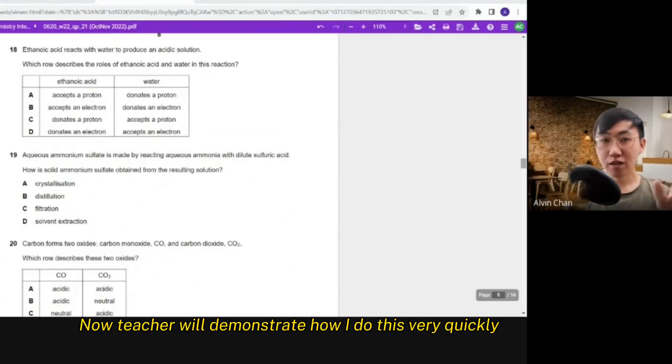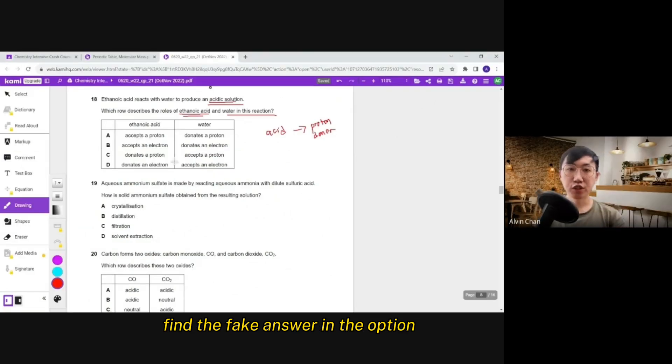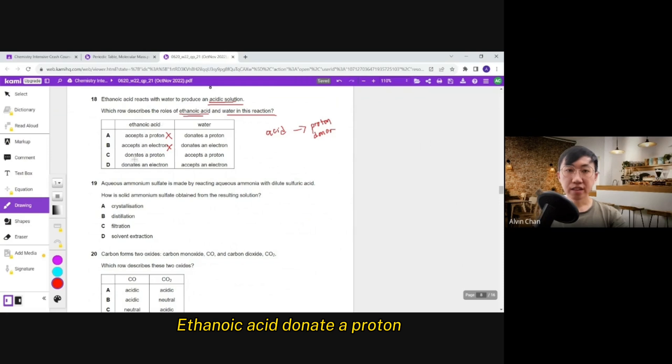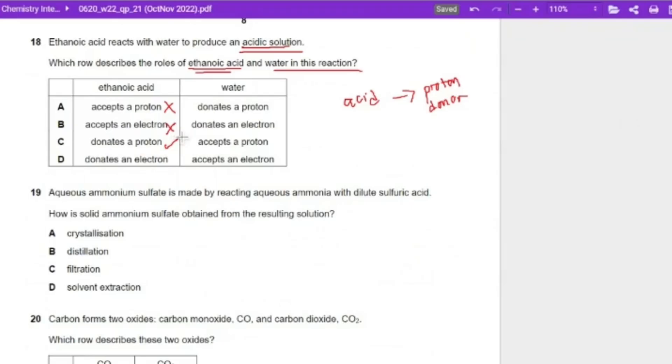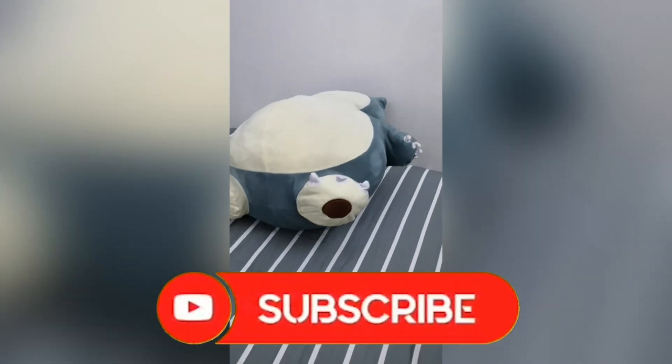Our teacher will demonstrate how I do this very quickly. Ethanoic acid reacts with water to produce acidic solutions. So that's the keyword. Which role describes the role of ethanoic acid and water in this reaction? So write your notes right now. Acid is proton donor. Find the fake answer in the option. Ethanoic acid accept proton out. Ethanoic acid accept electron. No such thing right? We don't learn such thing. Ethanoic acid donate a proton. Okay. Macam yes. Ethanoic acid donates an electron. No lah. We never learn this. So 18 is actually very fast. We can get answer C. Can you see that?